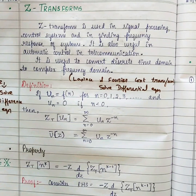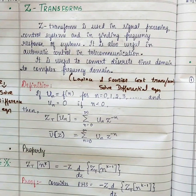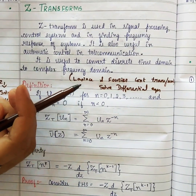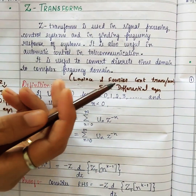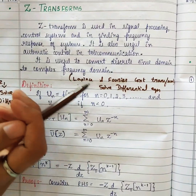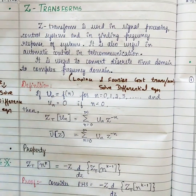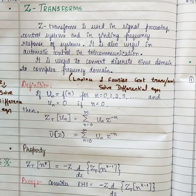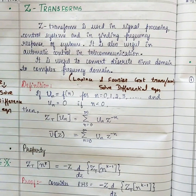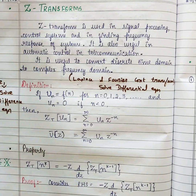Laplace and Fourier are continuous versions, so we use them to solve differential equations. I will explain the difference between those two when we study Laplace transform. This Z transform is nothing but a discrete version — it is useful to convert a discrete time domain to a complex frequency domain.